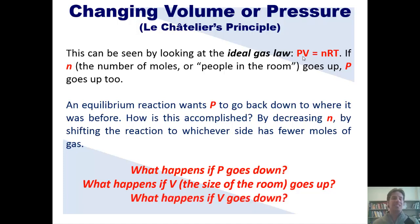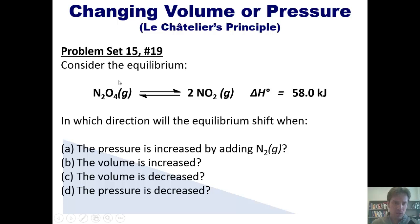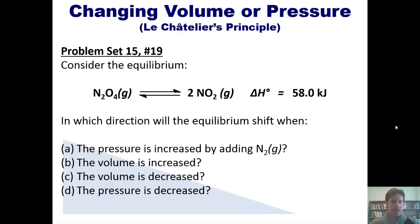What happens if V goes down? Imagine the room becomes smaller — the volume of the container decreases. Pressure goes up. So naturally you want to compensate by decreasing pressure, removing people from the room, by shifting the reaction in whichever direction decreases the number of gas moles. You can see that interrelation between pressure, volume, and gas moles expressed in the ideal gas law shown here. Consider this equilibrium: N2O4 in equilibrium with two moles of NO2, both being gas. In which direction will equilibrium shift in each of the given scenarios? I invite you to pause the video and attempt to answer them on your own.